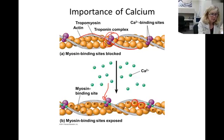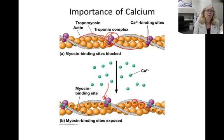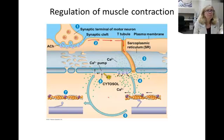When myosin can bind, the muscle can contract. But as soon as calcium is gone, the change in the troponin complex is removed and the tropomyosin falls back over the active binding sites. So now we can discuss how a muscle contraction is regulated by a signal from a motor neuron.